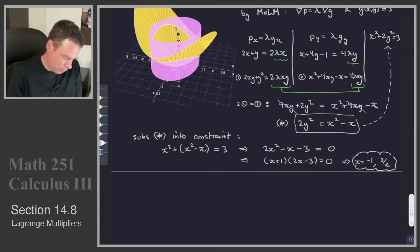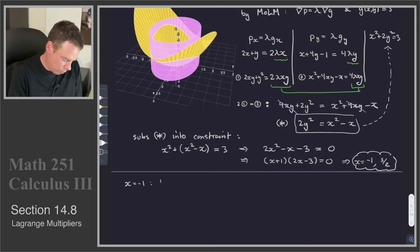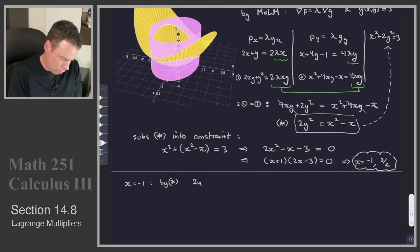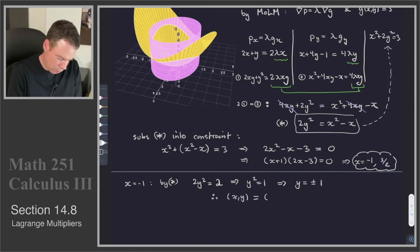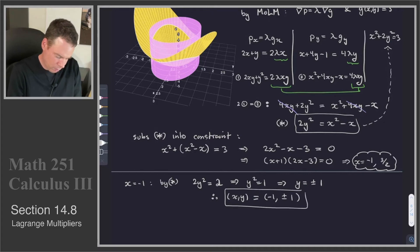There are only two possible x values: negative 1 or 3 halves. We use those to find the y values. If x equals negative 1, plugging into the star equation gives 2y squared equals negative 1 squared minus negative 1, which is 1 plus 1 equals 2, so y squared equals 1 and y equals plus or minus 1. So we get the two points (x, y) equals (-1, 1) and (-1, -1).